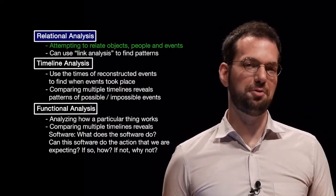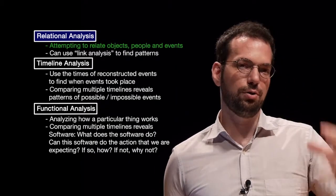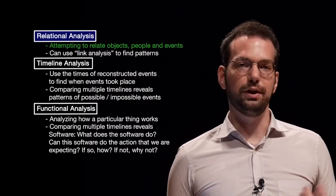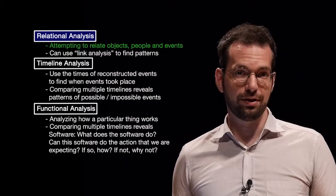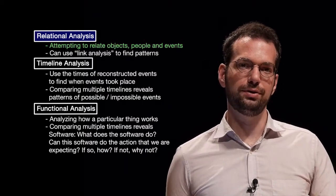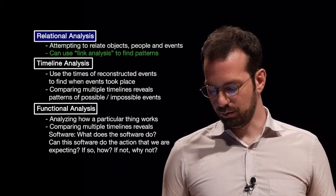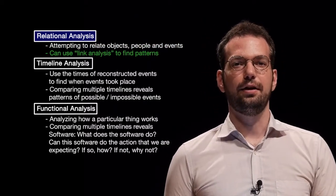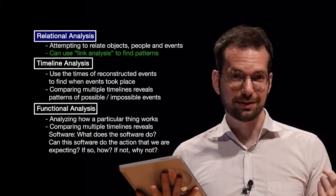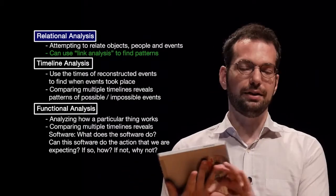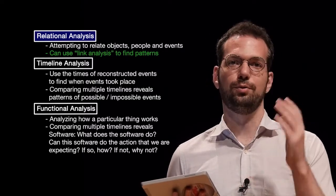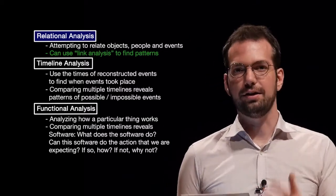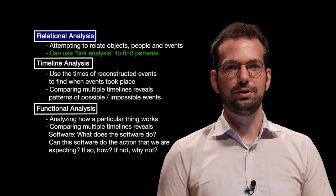Relational analysis is a very powerful way to show the connections between all of these people. It's just attempting to relate objects, people, and events to each other in a very easy-to-understand way. I will post an example of what that looks like. We can use something called link analysis to find patterns in all of these links — we want to associate, for example, two suspects together, making links through a cell phone or an email that they've had. That's the way we link these people together.